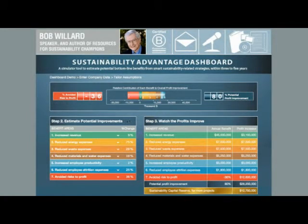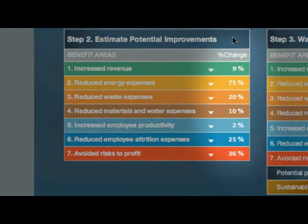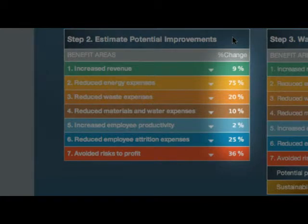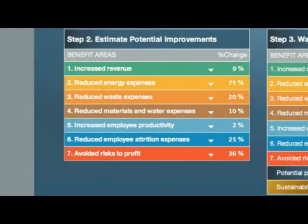Step two provides an opportunity to tune the percentage improvement possibilities for each of the seven benefits. The starting values in the percent change column are the very conservative potential improvement possibilities in each benefit area. They're based on research of what real companies have achieved with smart, aggressive sustainability strategies within three to five years.